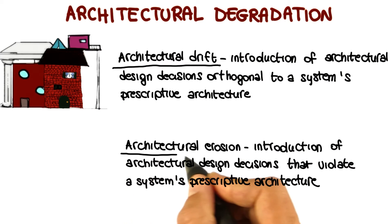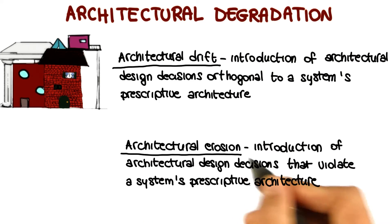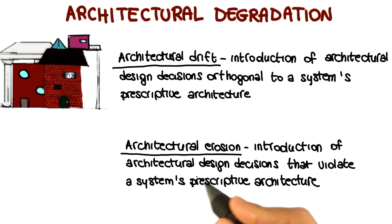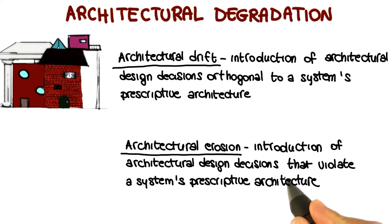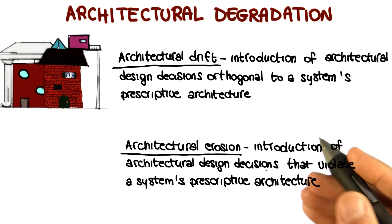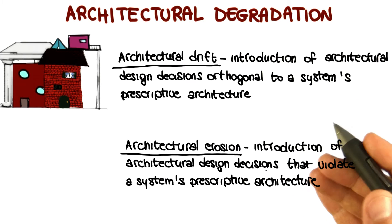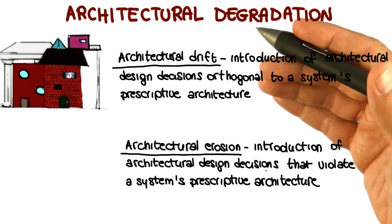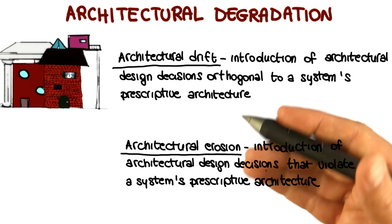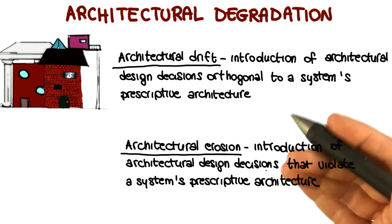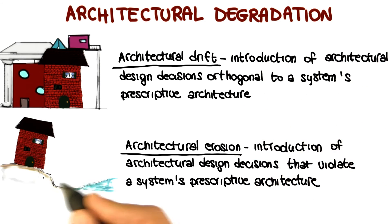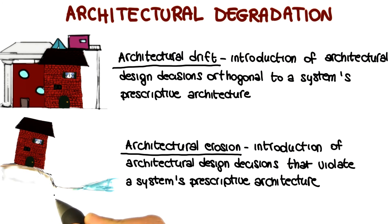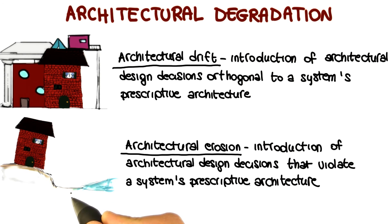The second concept is architectural erosion, which is the introduction of architectural design decisions that violate a system's prescriptive architecture. So in the first case we were introducing decisions that were orthogonal; here we're introducing decisions that don't comply with the prescriptive architecture. And the result of architectural erosion is typically a poor architecture — an architecture that is going to have problems in the future.